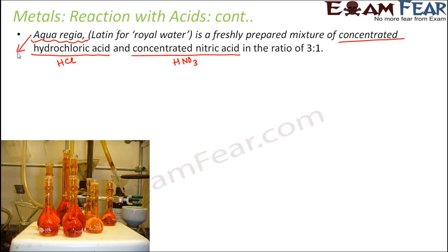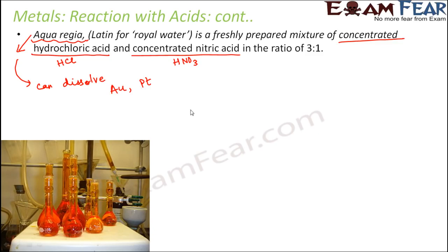Aqua regia is highly corrosive in nature and can dissolve even metals like gold and platinum. Gold is a metal that does not react with water or air, but this particular acid can actually dissolve gold. For example, when old gold jewelry needs polishing, you take it to a jeweler's shop. That is where aqua regia plays an important role — let us see exactly how gold reacts with aqua regia.